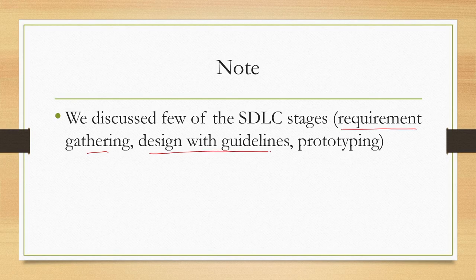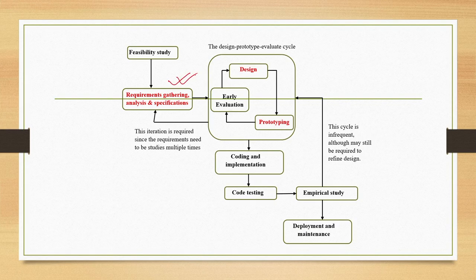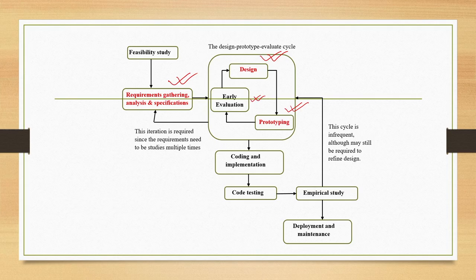We also learned about the Wizard of Oz approach. We have finished our discussion on several SDLC stages — requirement gathering, interface design stage with guidelines, and with this lecture, the prototyping stage. In subsequent lectures, we will take up the other stages — namely the quick evaluation of prototype and system design stage. That will be the subject matter of our next lecture: how to evaluate the prototypes — the other important stage in the design-prototype-evaluate cycle.